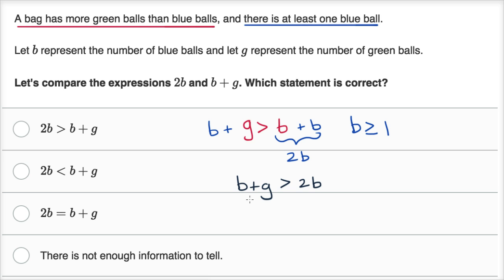And let's see which of these choices match up to that. So let's see, all of these have 2b on the left-hand side, so we could rewrite this as 2b is less than b plus g, and that is that choice right over there.